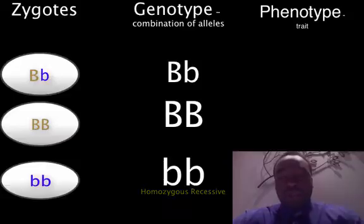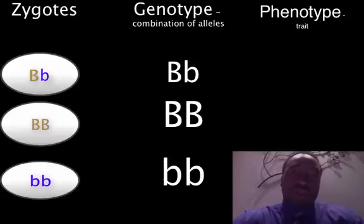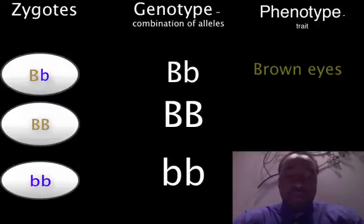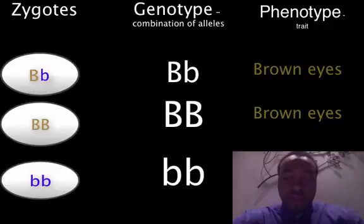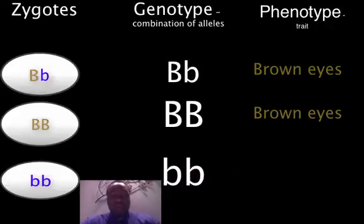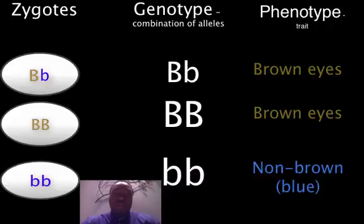Recall that brown is dominant. So the first organism's phenotype will be brown eyes because it has at least one copy of the brown allele. The second organism will also have brown eyes. And the third organism's phenotype will be blue eyes because it has two copies of the recessive allele.